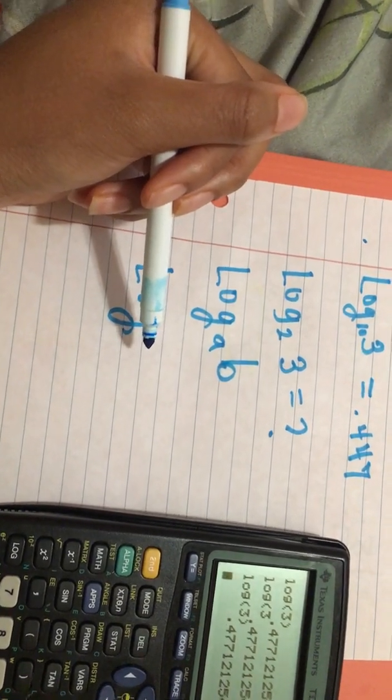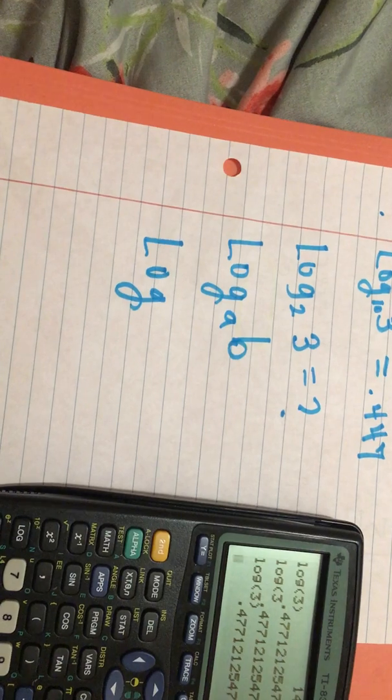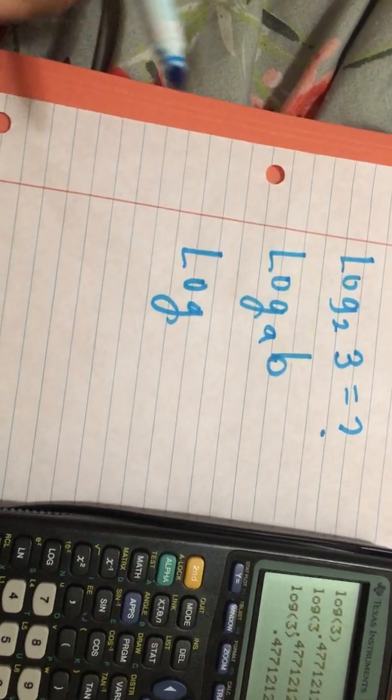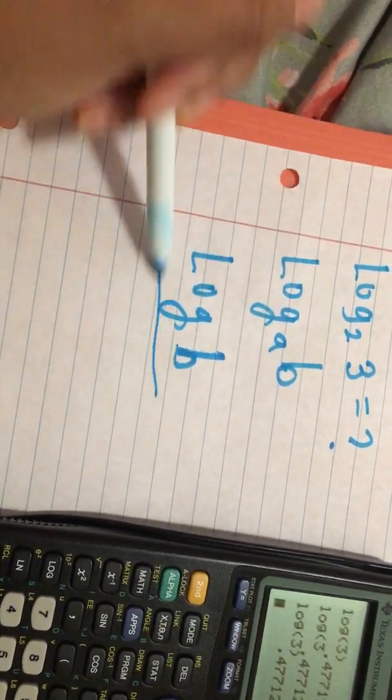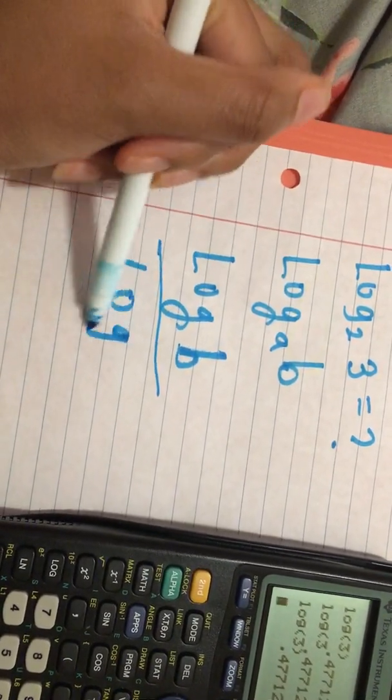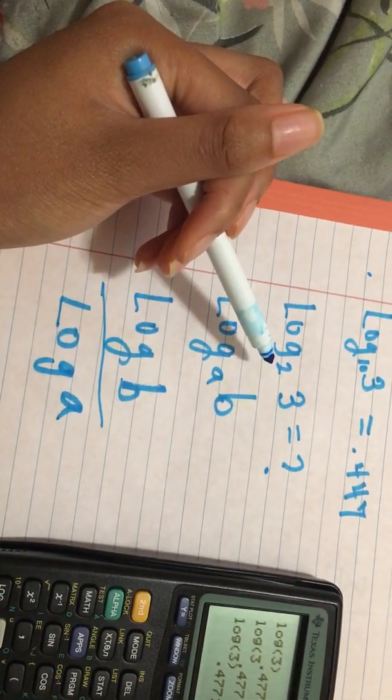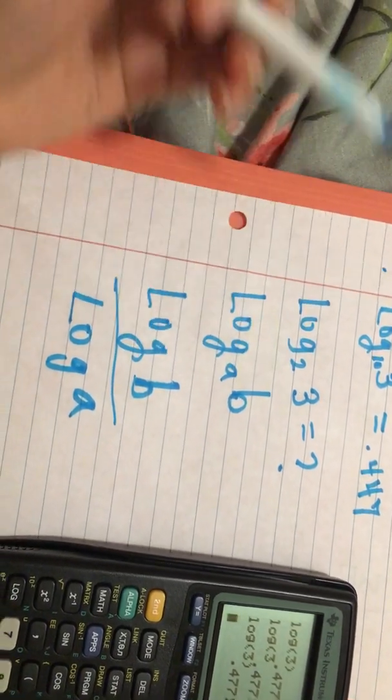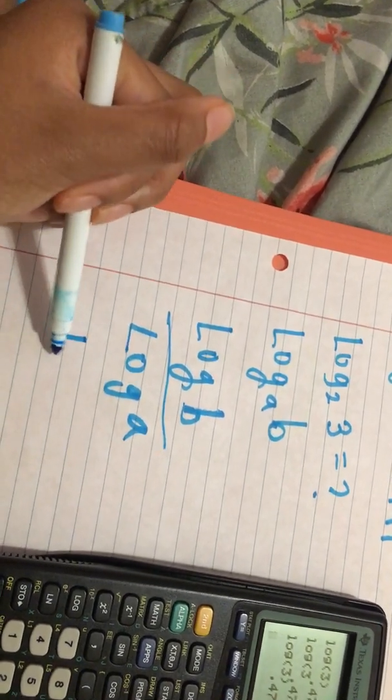Basically we will be dividing, because nobody got time to be sitting confused. So we're gonna go log B over log A. For this one, remember log B is the bigger number, so we would say log 3 over log 2.